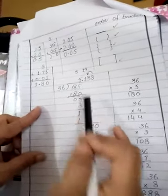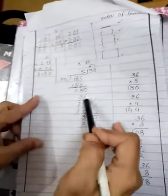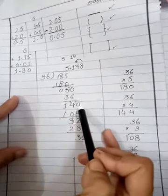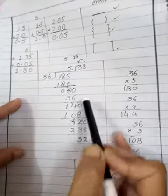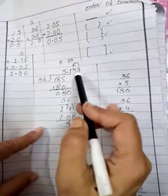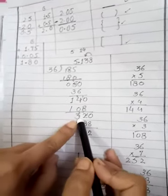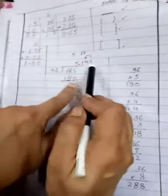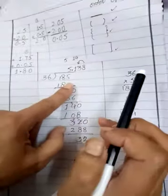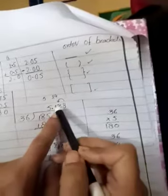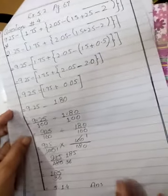185/36 ko divide karo: 36 × 5 = 180, decimal lagao, remainder 50, 36 × 1 = 36, remainder 14, phir 140, 36 × 3 = 108, remainder 32. Yahan 8 repeat hota jata hai — 8 is more than 5, to 3 ko 1 unit dega, 3 becomes 4. So 5.14 will be your answer. Thank you class.